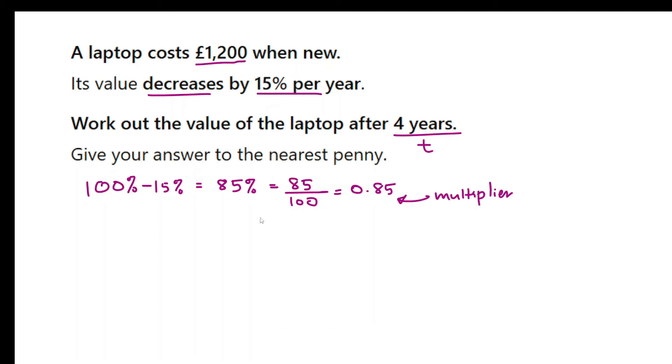That's the multiplier. Now all I need to do is 1200 multiplied by the multiplier, which is 0.85, raised to the power of 4 because it's a period of 4 years, so we need to put that.